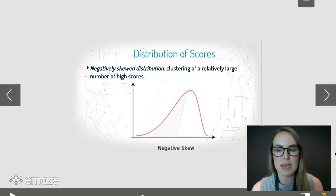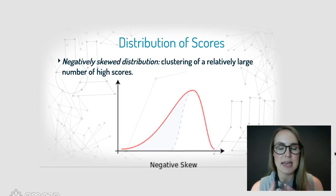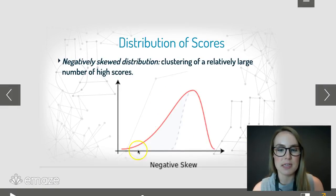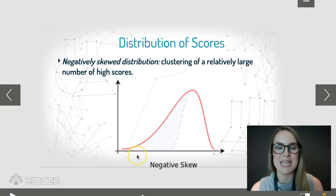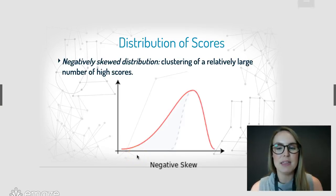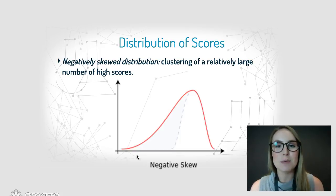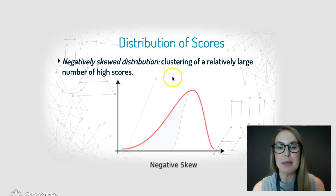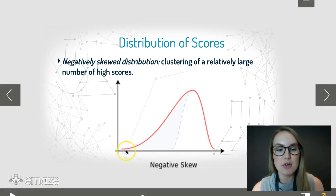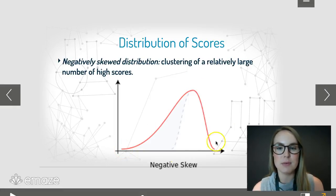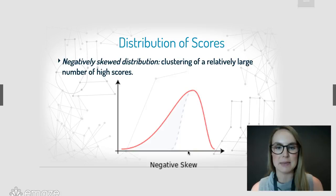A negatively skewed distribution is where you've got a lot of really high scores. This is what I'm hoping for you guys this year — that we're going to have a lot of people getting really good scores and almost nobody getting poor scores. Most of the class is going to be clustered around that positive end.